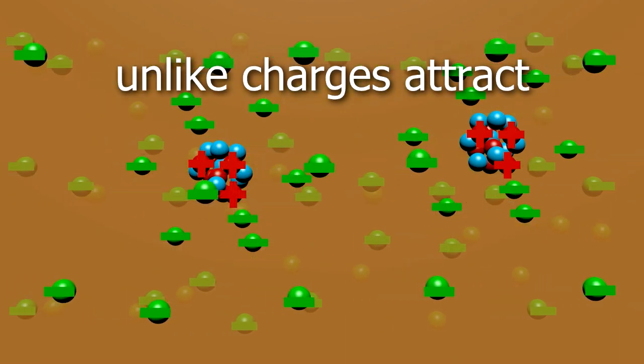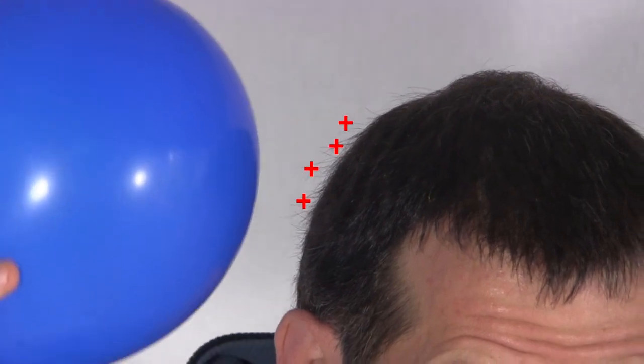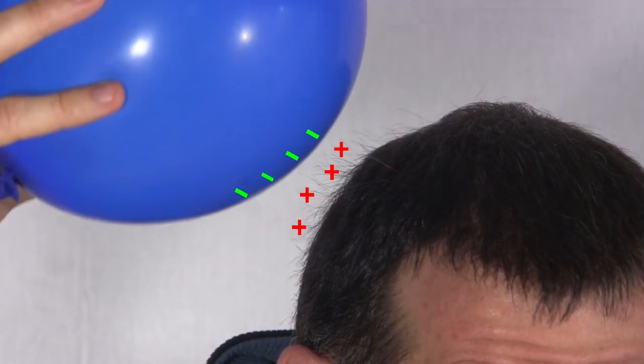Unlike charges attract each other. For example, after all this rubbing, my hair has more positively charged protons than electrons, and is attracted to this balloon that has extra negatively charged electrons.